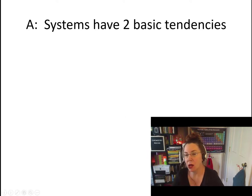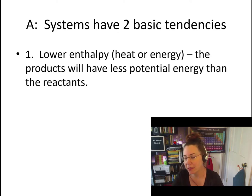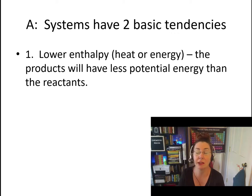So all systems in nature have two basic tendencies and this follows chemical systems, physical systems, etc. They have a tendency to move toward lower enthalpy or lower heat or energy, which means whatever the products are at the end of that action will tend to have less potential energy than the reactants.